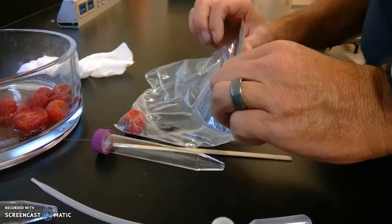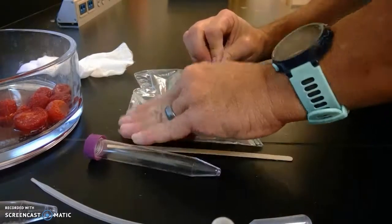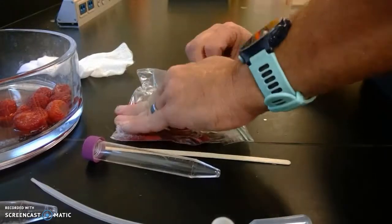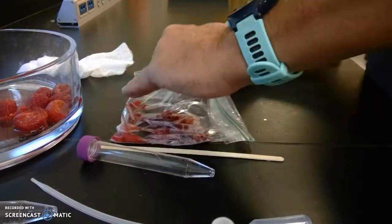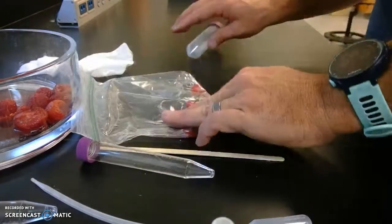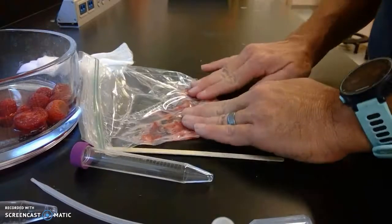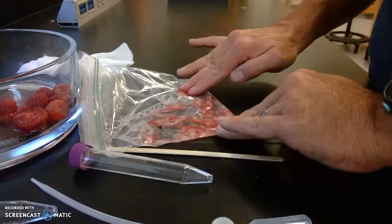Then mash up the strawberry. You want to do a good job mashing the strawberry. This is going to mix the detergent with the strawberry cells. The detergent is going to separate the cell membranes of the strawberries as explained in the lab book.